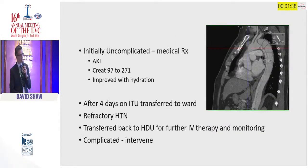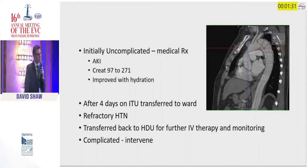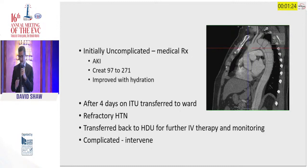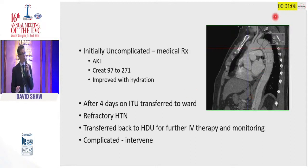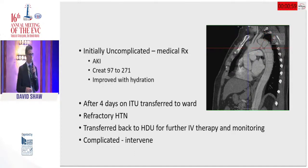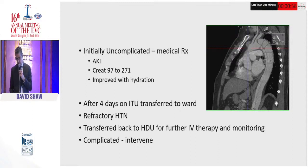This was initially treated as uncomplicated. He did have a small deterioration in renal function, but that improved without intervention, just with hydration, and he was transferred back to the normal ward after four days. Unfortunately, there was a failure to control his blood pressure on oral medication. Due to refractory hypertension he had to be transferred back to the HDU and required further IV therapy and monitoring. He also had adverse morphological features with a large total aortic size and large false lumen, so he was reclassified as complicated and the decision to intervene was taken.